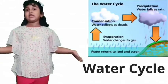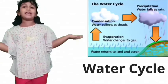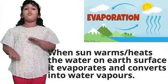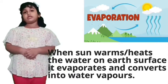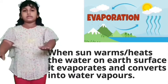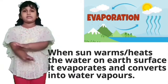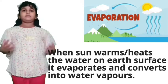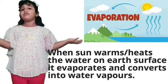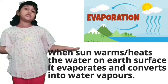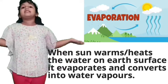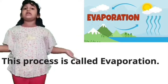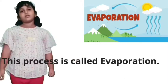So let us see the water cycle. When the sun warms the water on Earth's surface, it evaporates and converts into water vapors. And this process is called evaporation.